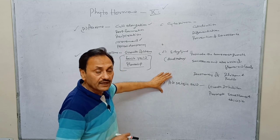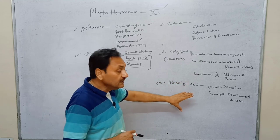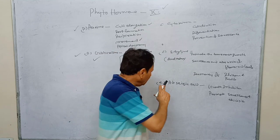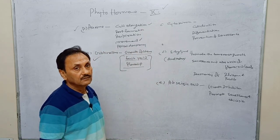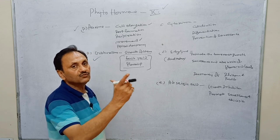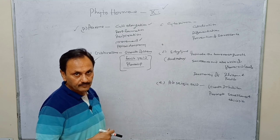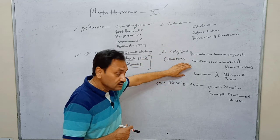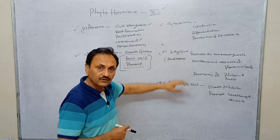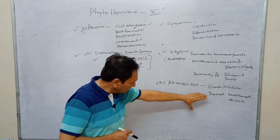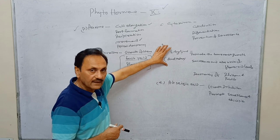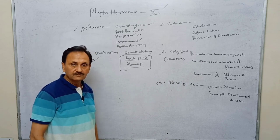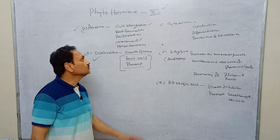Abscisic acid is an entirely growth-inhibiting hormone. It mainly promotes the ripening of fruits, promotes senescence and abscission, and plays an important role in annual plants that complete their life cycle in one season, such as wheat and rice. Ethylene is also responsible for ripening of fruits, senescence, and abscission. Overall, these phytohormones control different activities of the plant in a manner resembling animal hormones, which is why they are called phytohormones.